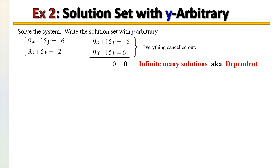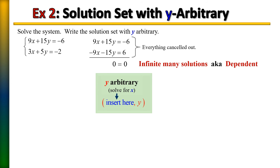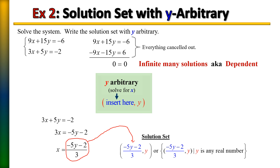Now that we've solved the system, let's write the solution set with y arbitrary. Recall that writing the solution set with y arbitrary means you're going to solve for x and plug that result into x's place of your solution set. Taking the second equation, the first step towards solving for x is to subtract 5y from each side. Then divide by 3, and x equals negative 5y minus 2, all over 3. We take what x equals and plug it into x's place of our solution set. And there you have it.